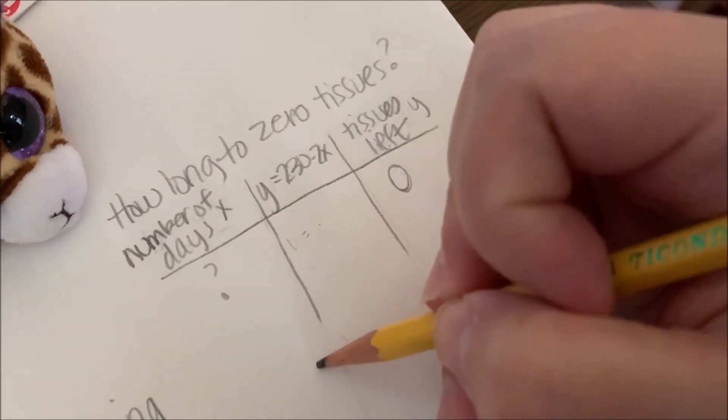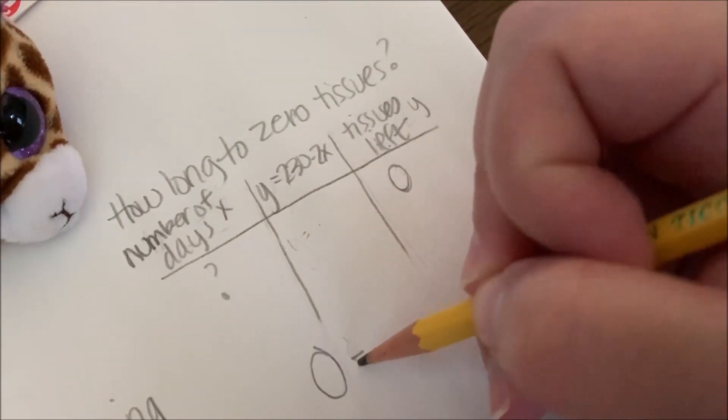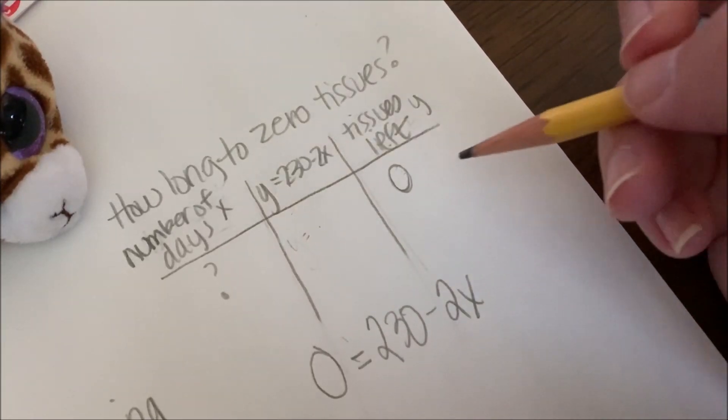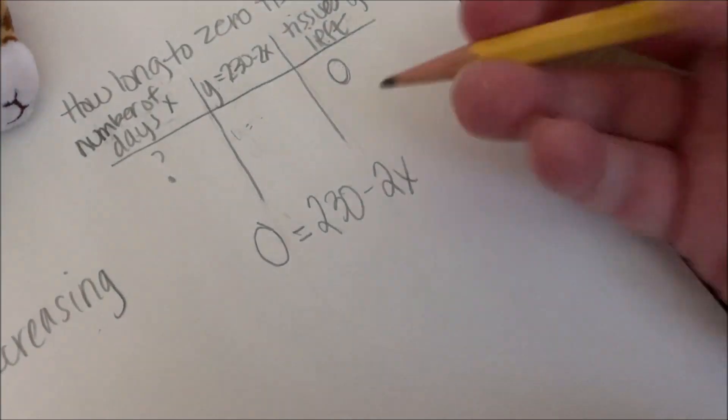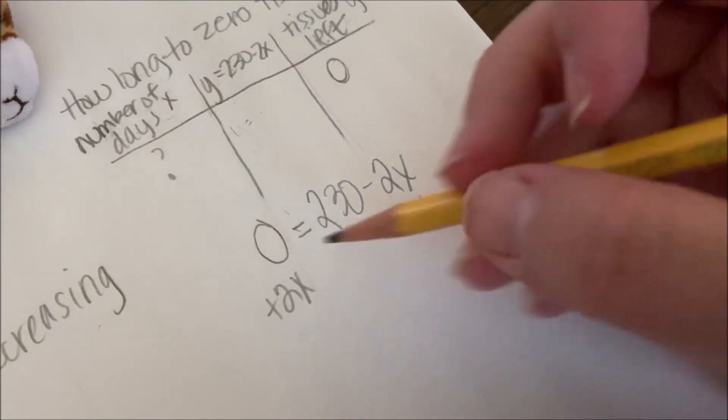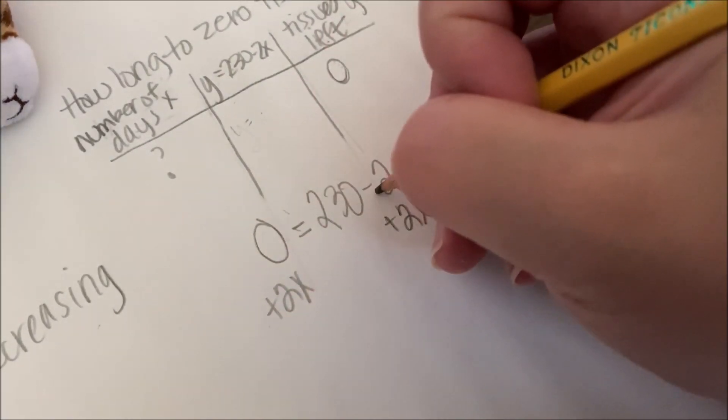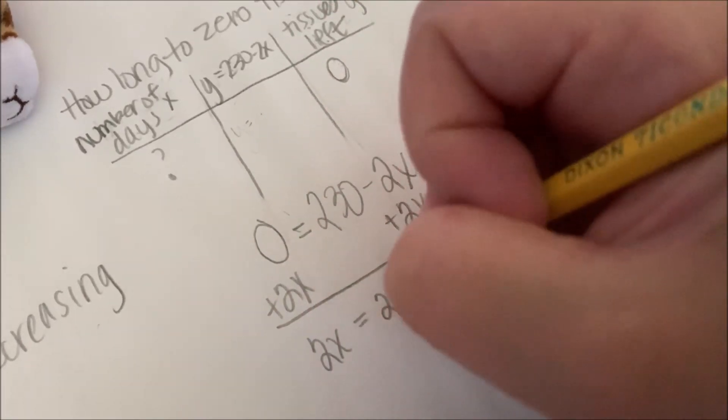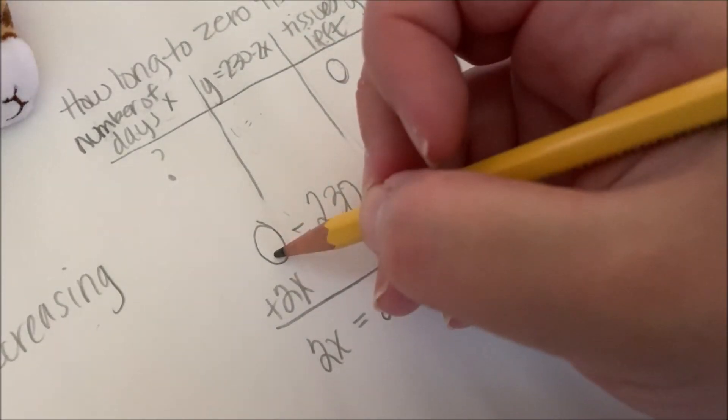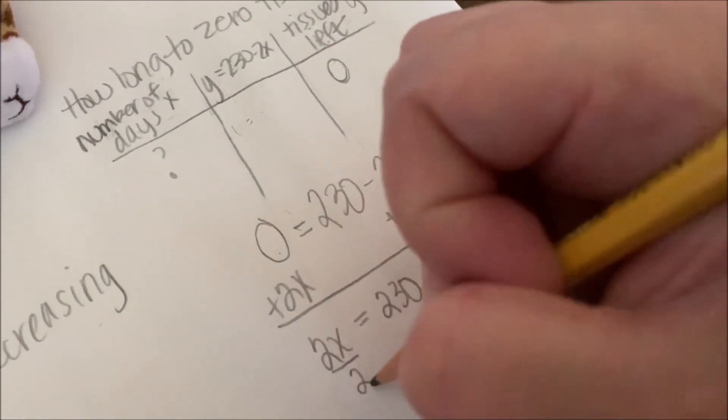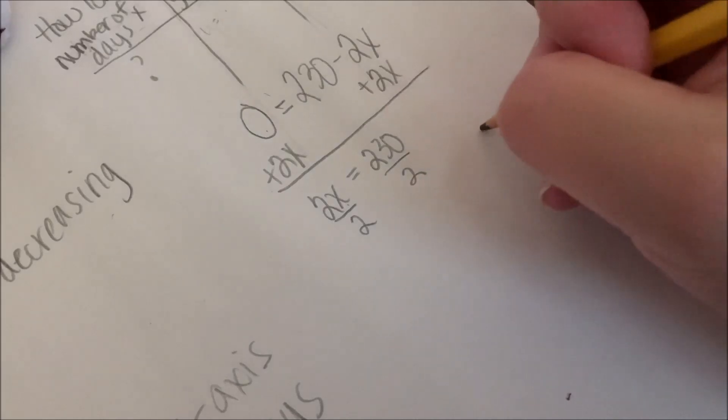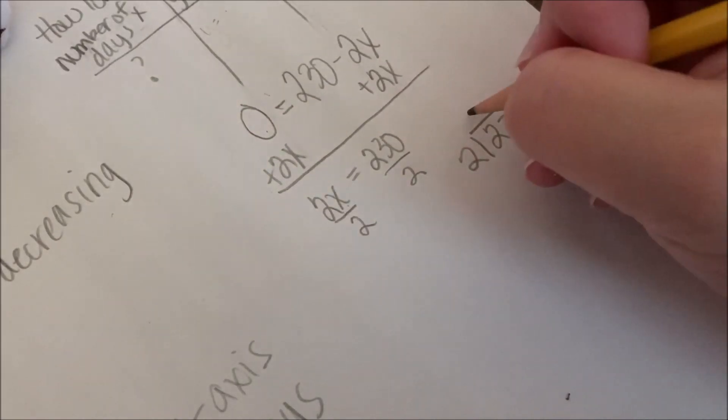Zero tissues left. 230 minus 2x. I can solve this equation. I'm going to move the 2x over here so it's positive because right now it's a negative 2. Then I'm left with 2x equals 230 because 2x plus zero is just 2x. And now I'm dividing by 2. So 230 divided by 2.